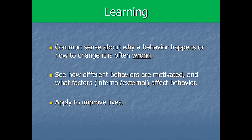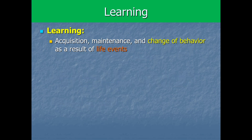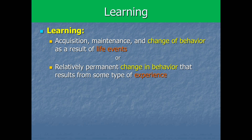So when we say learning, what are we actually talking about? It's hard to capture such a foundational concept in a simple definition, but you'll find something along these lines in most textbooks: learning is the acquisition, maintenance, and change of behavior as a result of life events. Or another textbook might say learning is a relatively permanent change in behavior that results from some type of experience. Regardless of the specific wording, I've highlighted what are basically the common elements that show up in most definitions.